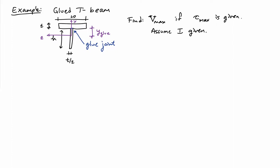In this example, I'd like to consider a beam with a T-shaped cross-section. The cross-section of the beam is made up by gluing two boards together.